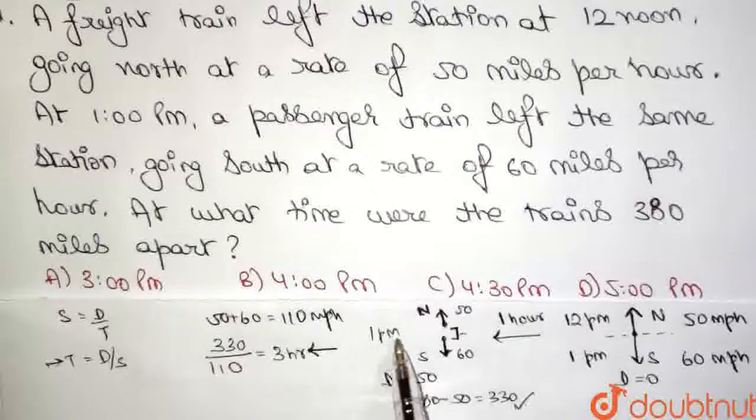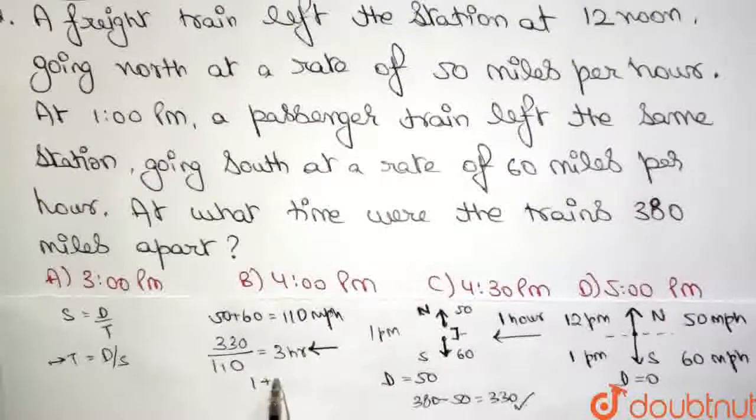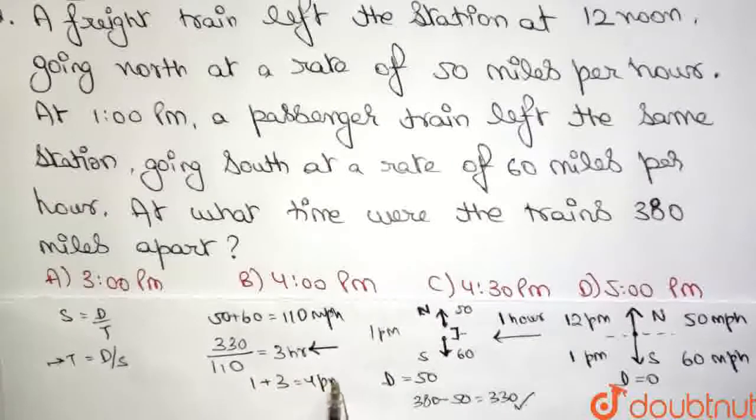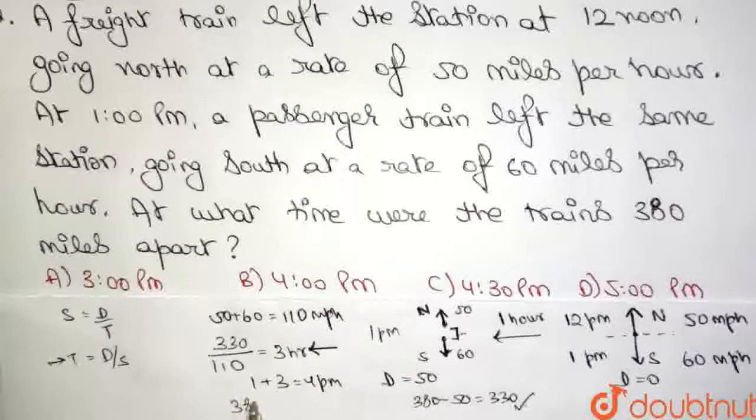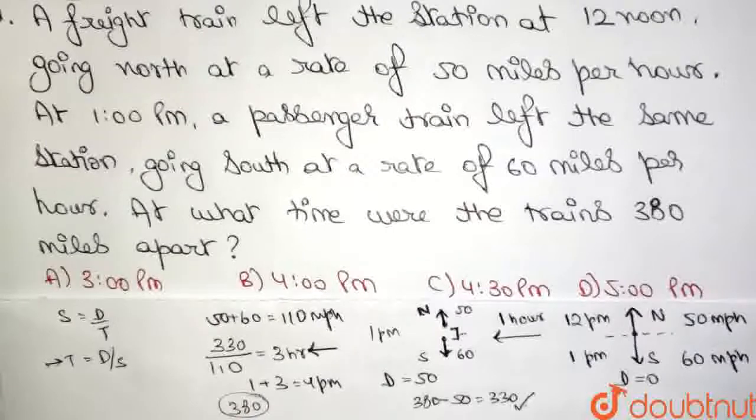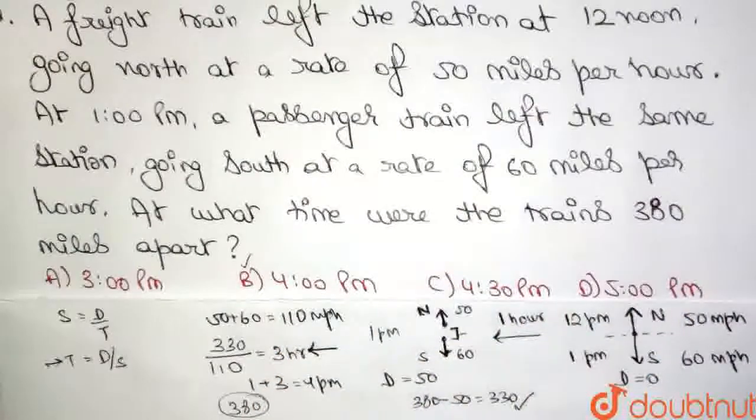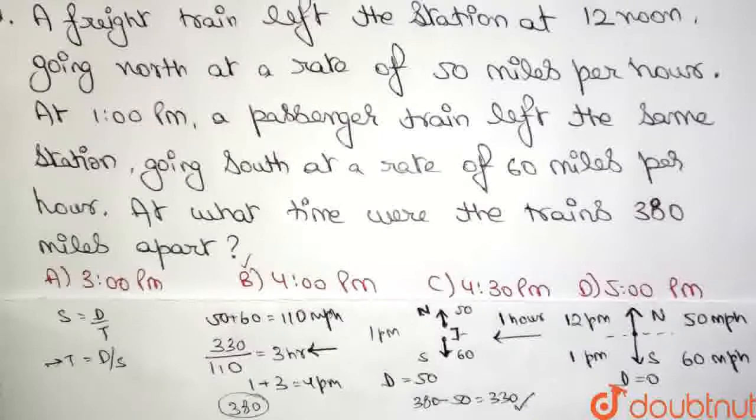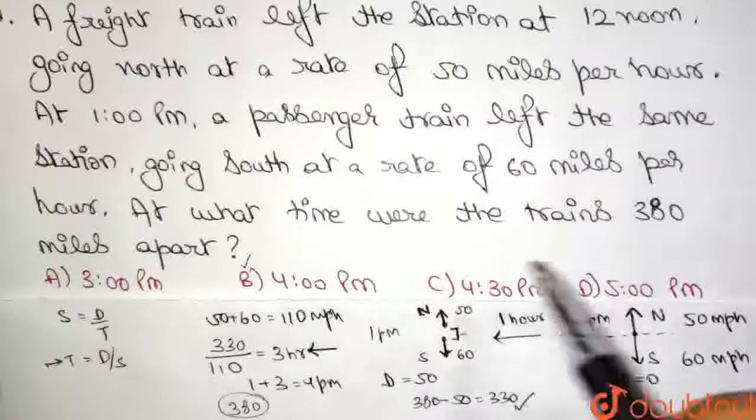So, after 1 pm, we have calculated that 3 hours more would be required. So, 1 plus 3 is equal to 4. So, time would be 4 pm when these trains are actually finally 380 miles apart. And upon comparing with the options, we actually see that this matches with option B. So, we see that the correct answer to this particular question is option B, which is 4 pm and these trains will actually be 380 miles apart at 4 pm in the evening.